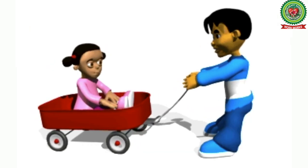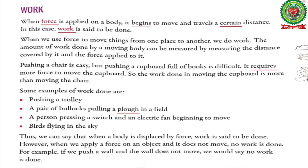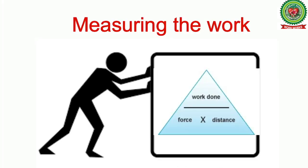When we use force to move things from one place to another, we do work. The amount of work done by a moving body can be measured by measuring the distance covered by it and the force applied on it. So to measure the amount of work done, you need to measure the distance covered by an object and the force applied on it.